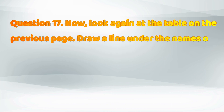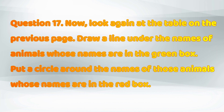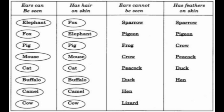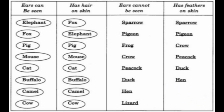Question seventeen: look again at the table on the previous page. Draw a line under the names of animals in the green box and put a circle around the names of those in the red box. Animals whose ears can be seen are: elephant, fox, pig, mouse, cat, buffalo, camel, cow. Animals whose ears cannot be seen are: sparrow, pigeon, frog, crow, peacock, duck, hen, lizard.